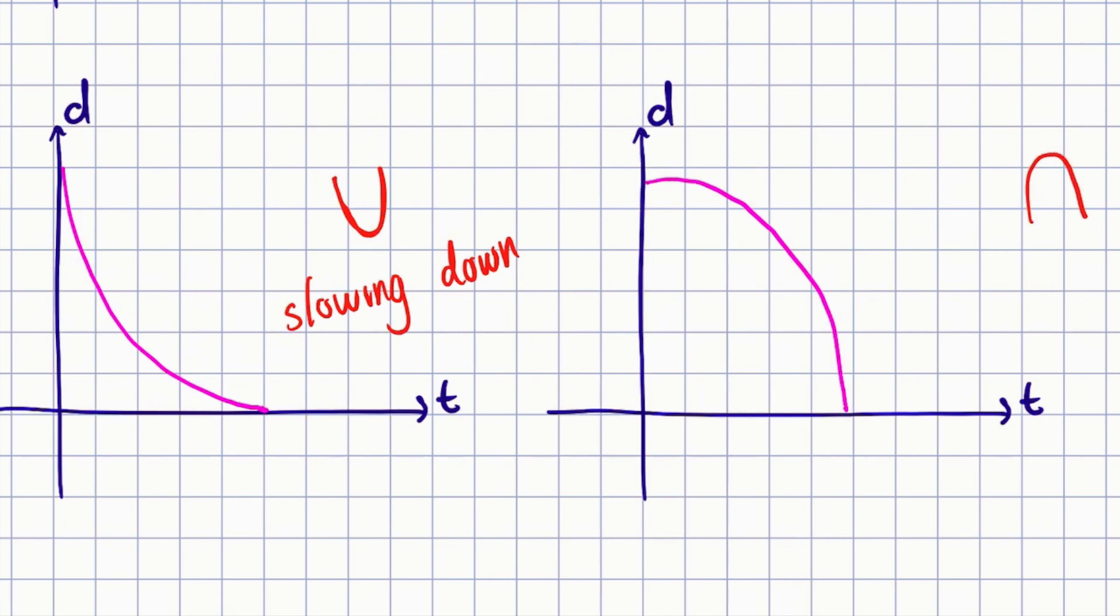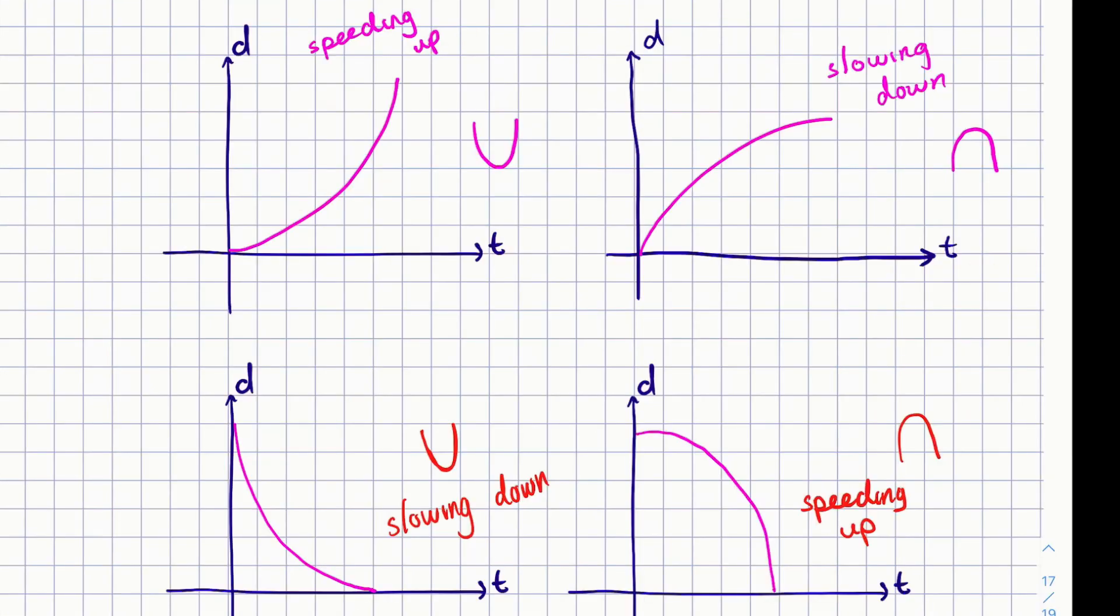Likewise, for the graph where the parabola appears to be opening down, we might be tempted to think that it is slowing down, but in this case here it is actually speeding up. That means that our conclusion about remembering if parabola opens up or down is wrong, so we should cross that out.